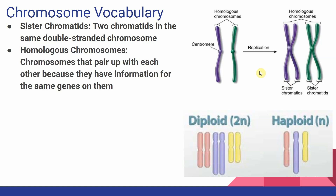Next, we have what are called homologous chromosomes. During meiosis, we're going to talk about these chromosomes pairing up with each other. The reason they do this is because they have information for the same genes on them. When we look at our two double-stranded chromosomes over here, we call these a homologous pair because they should contain information for the same genes on them.